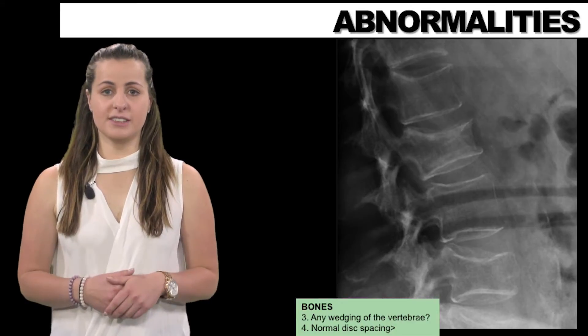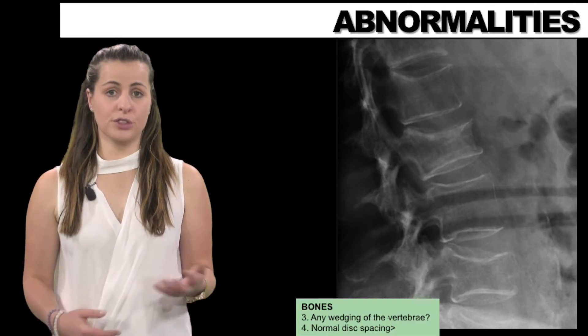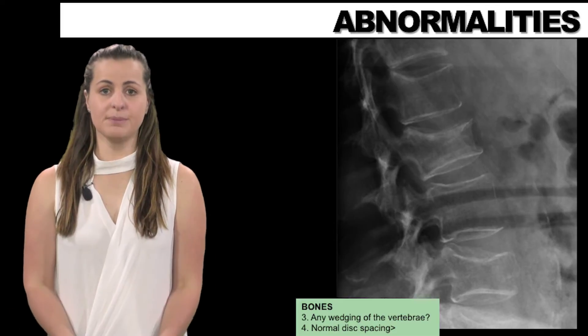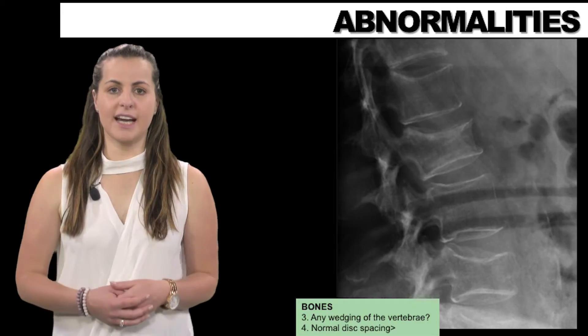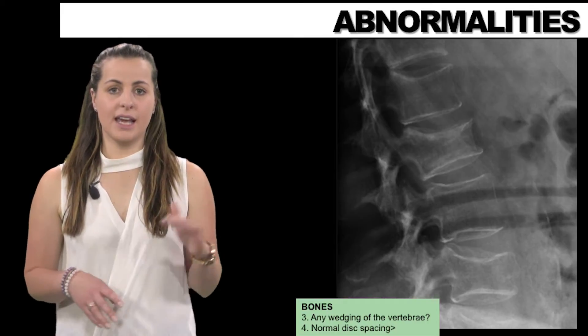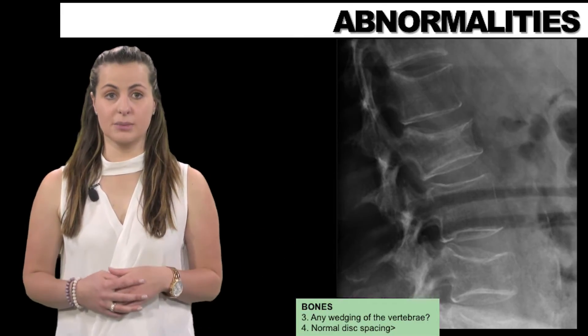Long-term bisphosphonate use has also been associated with insufficiency fractures. These fractures manifest as a vertebral crush or wedge fracture. Considering a burst fracture specifically: this is a type of compression fracture related to high-energy axial loading spinal trauma that results in disruption of the posterior vertebral body cortex with retropulsion into the spinal canal.